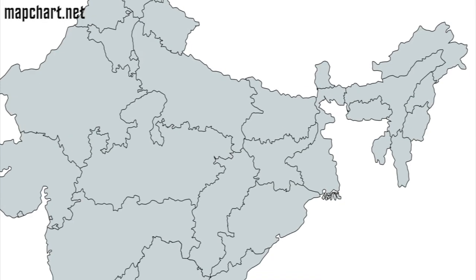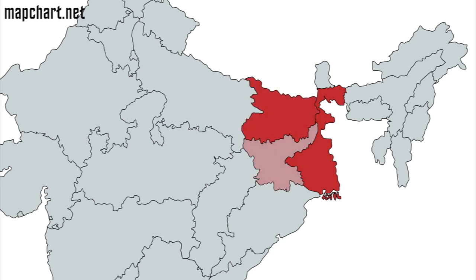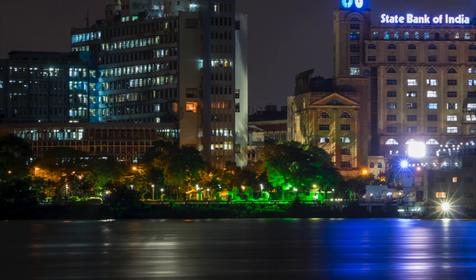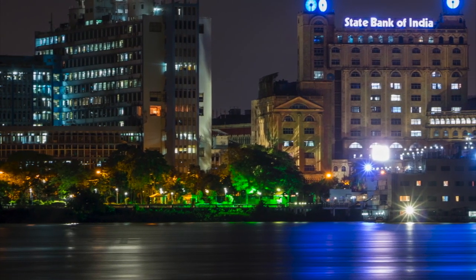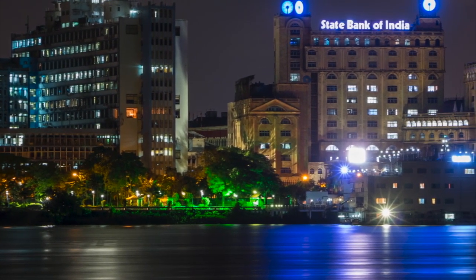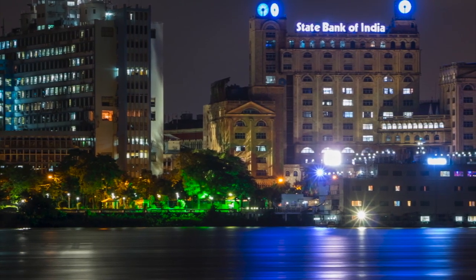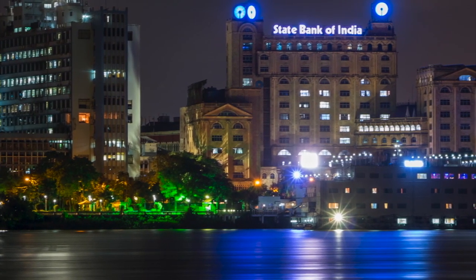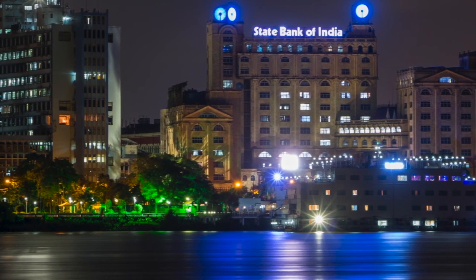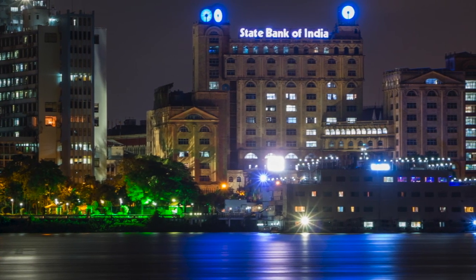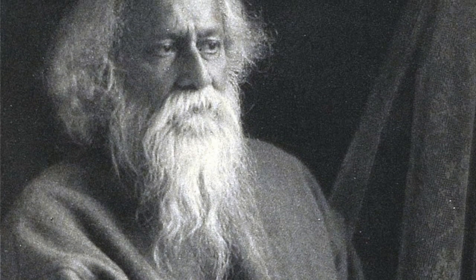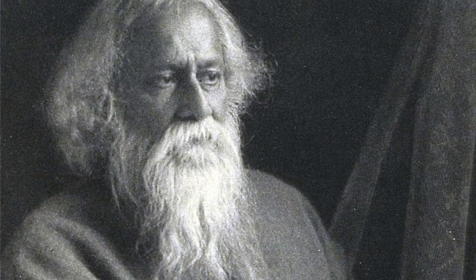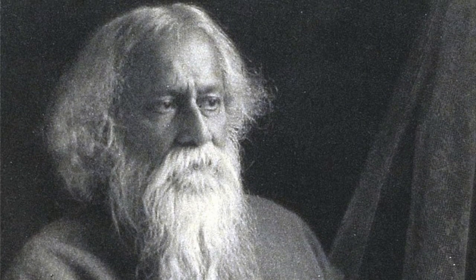Next, we have East India, including West Bengal, Bihar, Jharkhand, and Odisha. The largest city in this region is Kolkata, also the third largest city in the whole country. Though East India also largely speaks Hindi and English, one of their other more common languages is Bengali, which is also spoken in neighboring Bangladesh. Fun fact: Kolkata-born poet and songwriter Rabindranath Tagore wrote the national anthems of both India and Bangladesh.